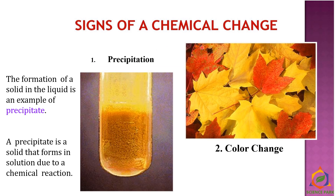The first sign of chemical change is precipitation or change in color. In India, we may not come across different colors of leaves, but the green color of a leaf always changes to brown — that is a color change and a chemical change. Precipitation is the formation of a solid in a liquid. A precipitate is a solid that forms in a solution due to a chemical reaction.